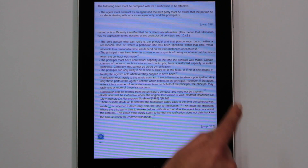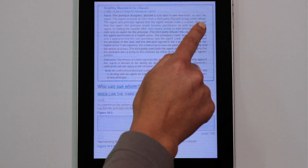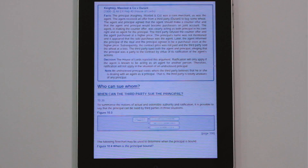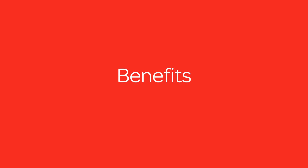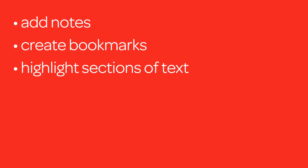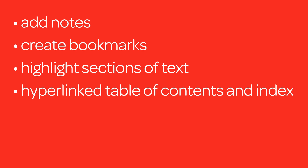LexisNexis e-books also provide cross-reference links to other relevant sections of the text. What makes LexisNexis e-books so usable is how similar they are to the print version, allowing you to use them in familiar ways. As we've seen, you can add notes, bookmark pages, and even highlight sections and passages. The hyperlinked table of contents allows you to quickly navigate through sections and chapters.